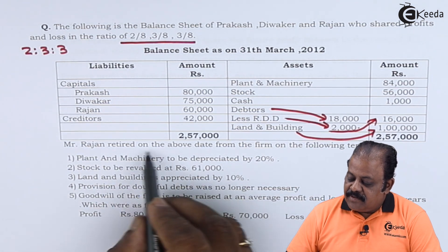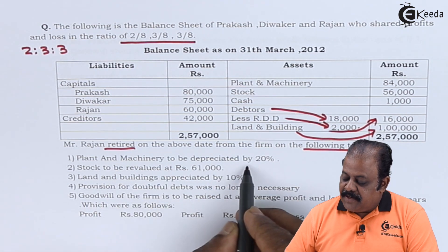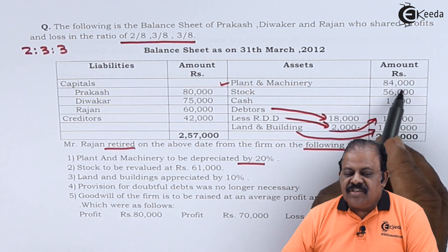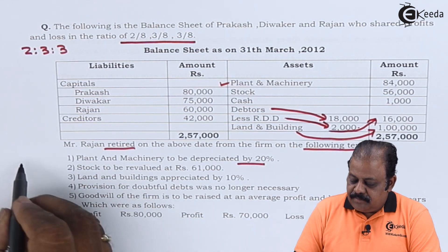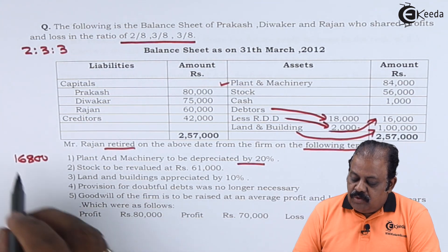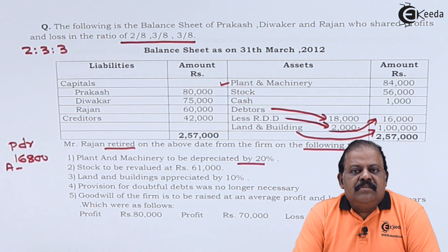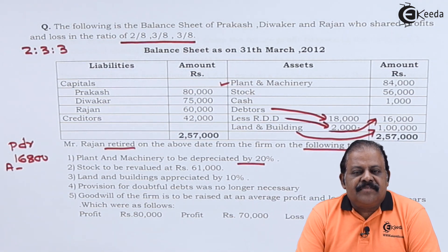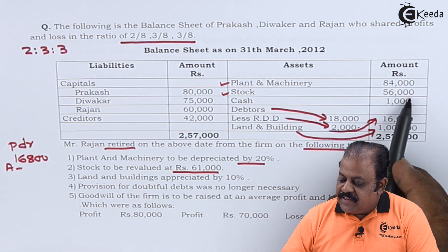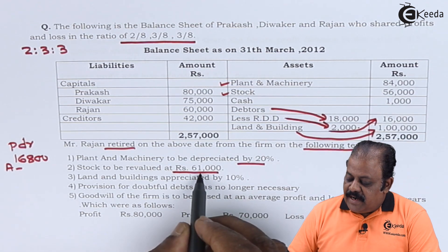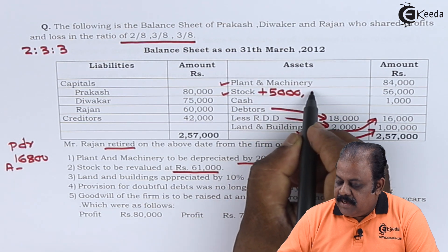Land and building having value 1 lakh. Mr. Rajan retired on the above date on the following terms. Plant and machinery to be depreciated by 20%: plant and machinery is 84,000, so 20% depreciation is 16,800. It will be debited to the profit and loss adjustment account. Stock to be revalued at Rs. 61,000; stock here is 56,000, revalued at 61,000, so it goes up by 5,000.